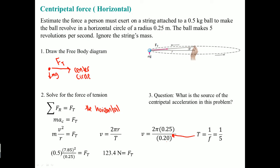A typical multiple choice question might ask: what is the source of the centripetal acceleration in this problem? The correct answer is the tension force. It is not force gravity. It is nothing else. The only source of centripetal acceleration in the problem is the tension force.